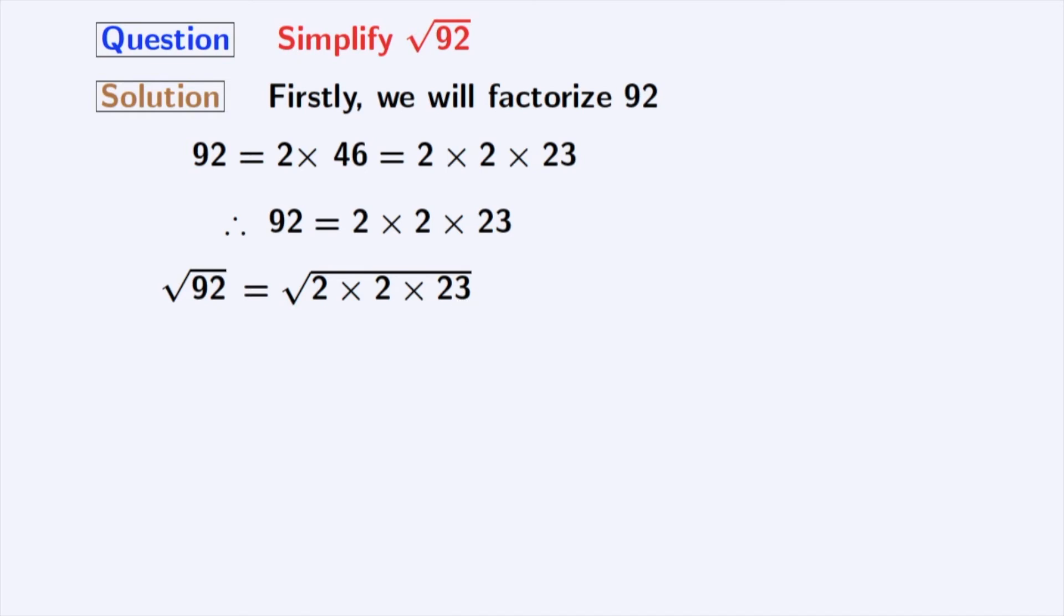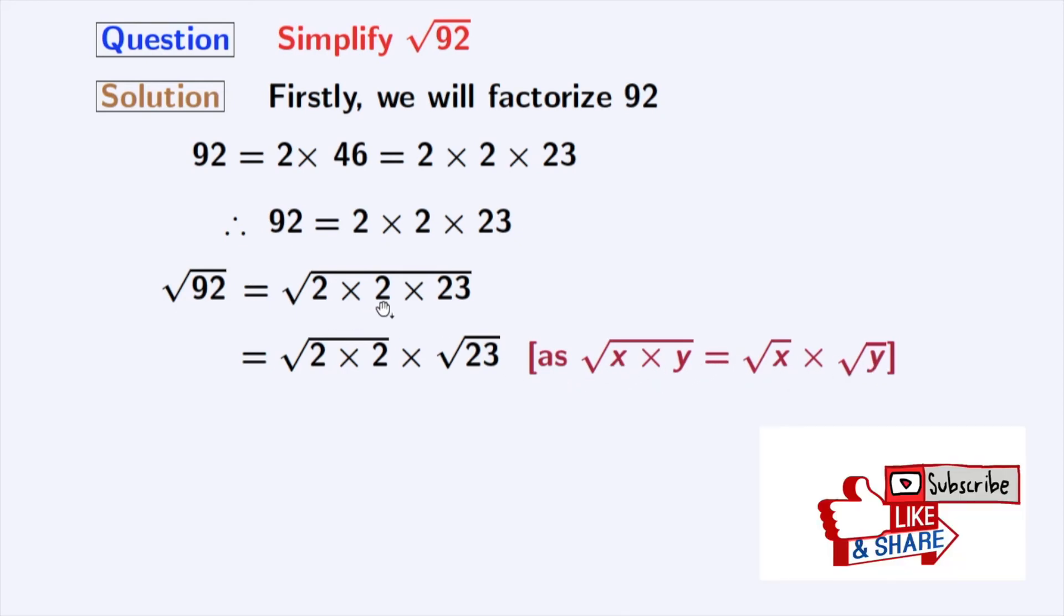After grouping, we get square root of 2 times 2 times square root of 23. Here, we have used the rule of square root of x times y is equal to square root of x times square root of y. Here, x is 2 times 2 and y is 23.